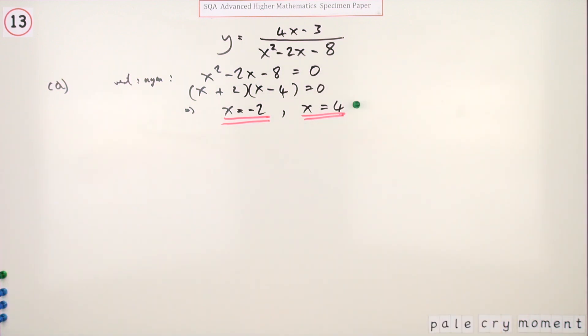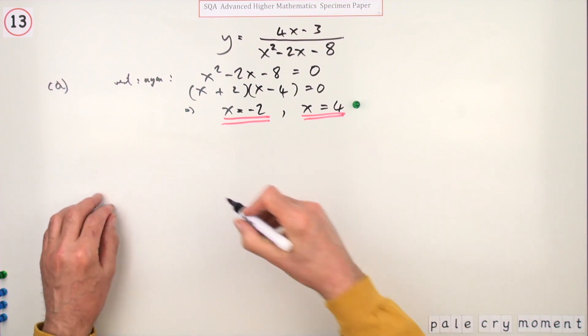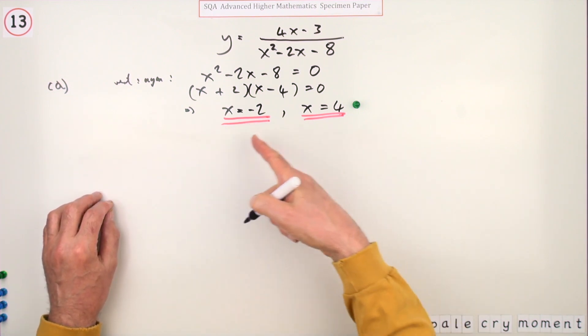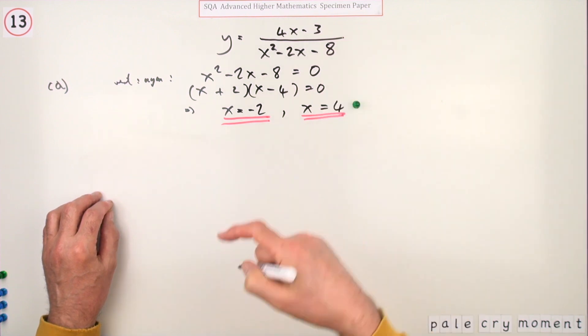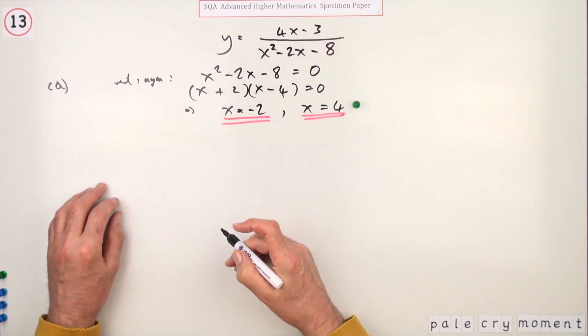That's the first mark for getting x equals 4 or x equals negative 2. But then the reason: well, the reason is when x is either of those values, the denominator will be zero. State that, or simply say that means y tends to infinity when x is either of those values.